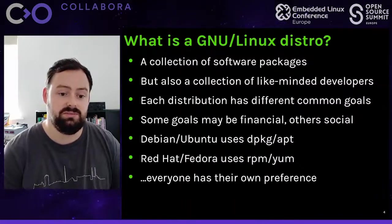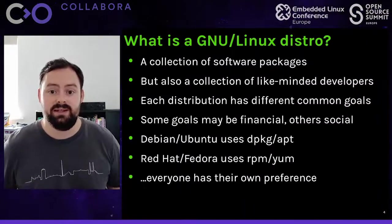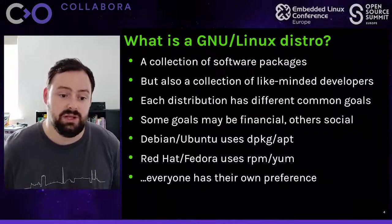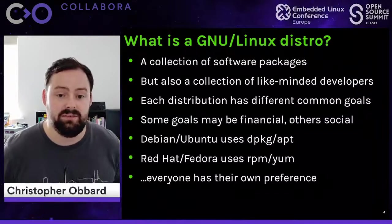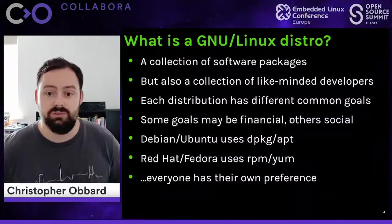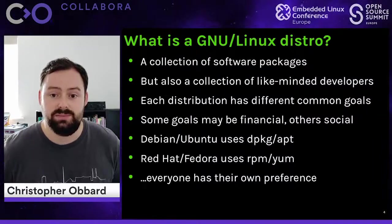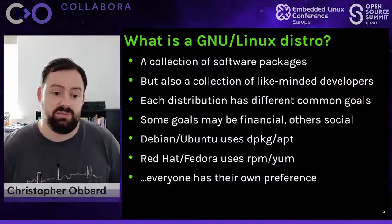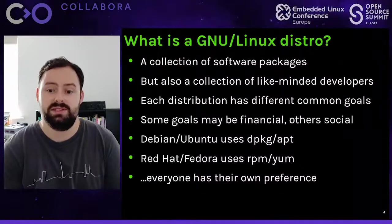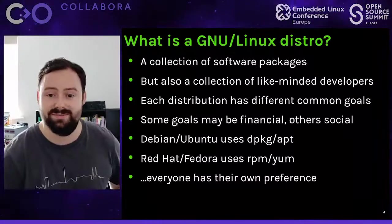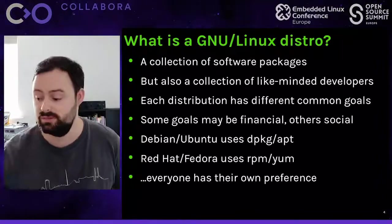Debian and Ubuntu use dpkg or apt, and the Debian goals are mainly social. Red Hat and Fedora use RPM and YAML to install packages, and their goals are mainly financial, looking for a stable distribution for enterprise customers. Everyone's got their own preferences - in the end the software you end up with is pretty much the same anyway. My personal preference is Debian.